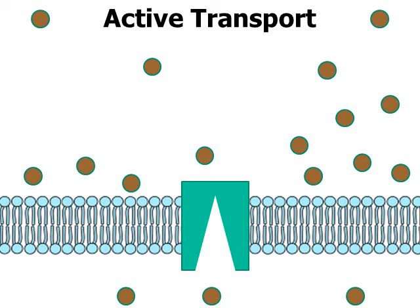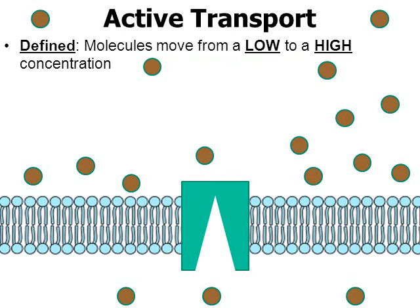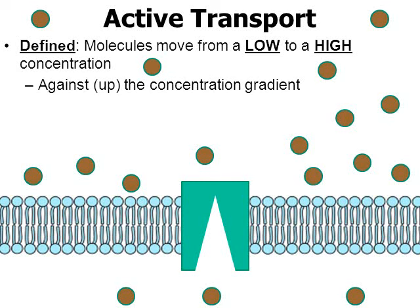With active transport, molecules move against the normal process of diffusion — from a low concentration to a high concentration. They're moving not down the concentration gradient but up the concentration gradient. If you imagine an analogy like pedaling a bicycle uphill, that's going to require some energy. So in active transport, energy is required. In the animation, you can see that brown circle is trapped inside a protein channel embedded within the cell membrane.